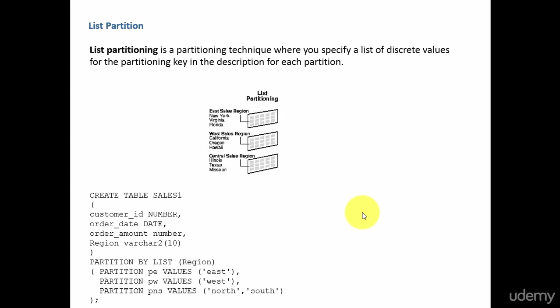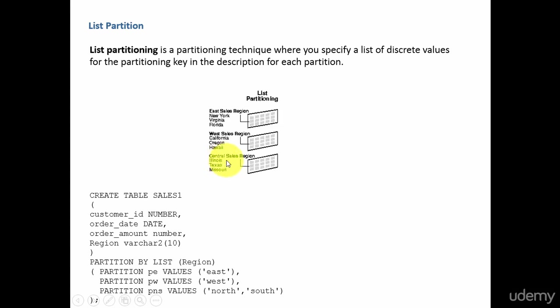In the list partition, based on a list of values, you divide your data. For example, I want to divide my data based on the region of the customer — all the sales related to the east region in one partition, all the sales belonging to west in another partition, and all the sales belonging to central in another partition. For these three different values, you create three partitions and store the data accordingly.